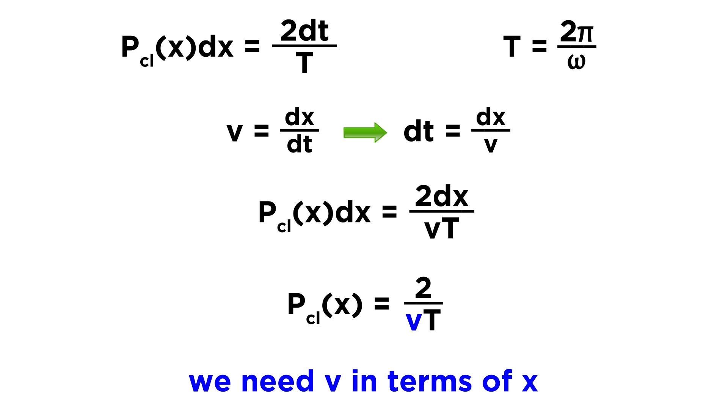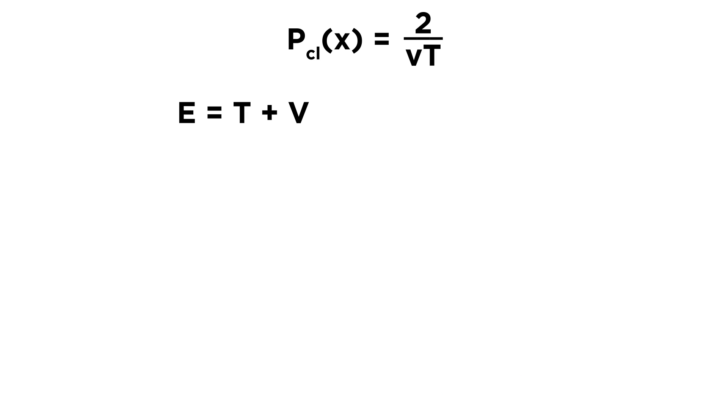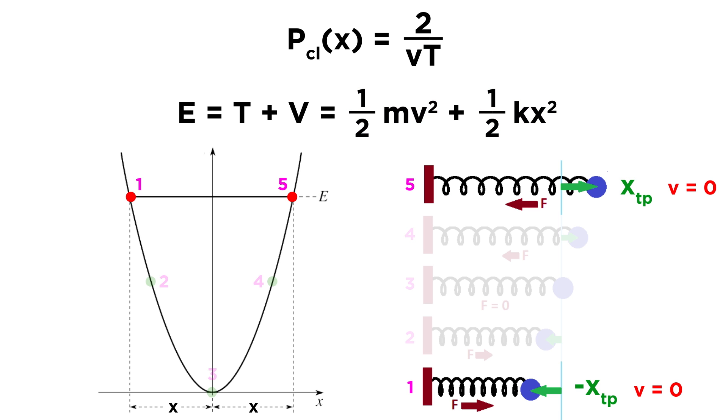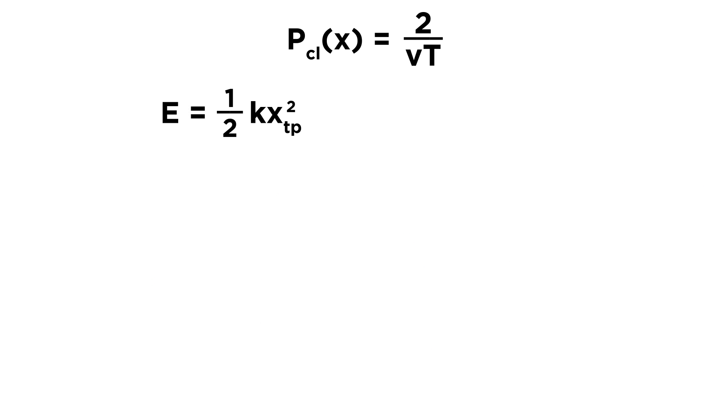Now we need to write velocity as a function of x, so we can't use the equation that we found before for x of t, since this is the position with respect to time. Let's instead find this from the following equation representing total energy, which is the sum of the kinetic and potential energies, which are represented by these expressions. Now we know that at the turning points, which can be represented as plus or minus xtp, the velocity is zero. So let's plug in xtp for x, and zero for v. The kinetic energy term will then go away, and we can solve for xtp, which will equal root 2e over k.